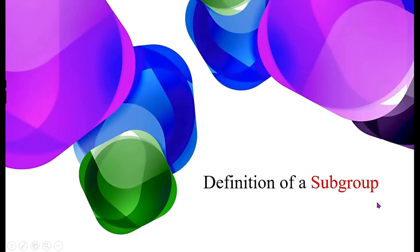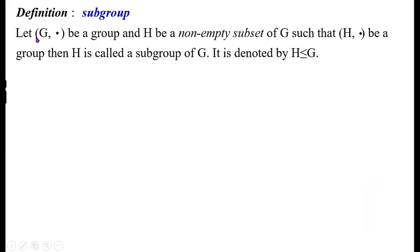Now we define what is a subgroup. Let (G, ∘) be a group and H be a non-empty subset of G such that (H, ∘) is also a group. Then H is called a subgroup of G, denoted H ≤ G. Note that this symbol here stands for 'subgroup', not 'less than or equal to'.